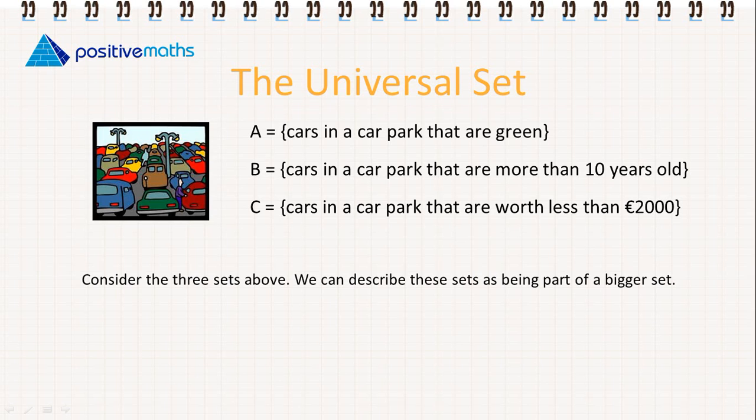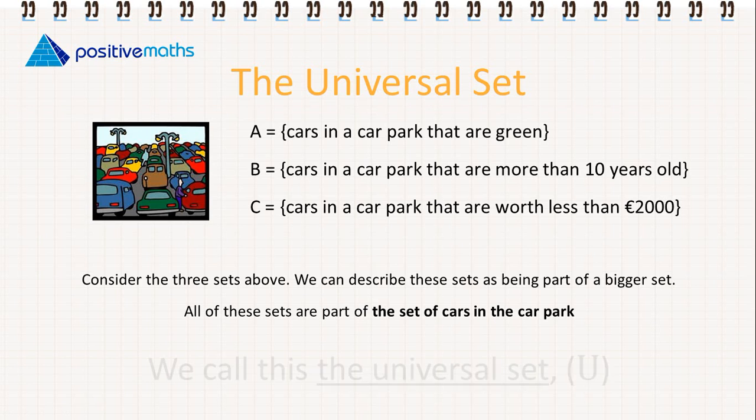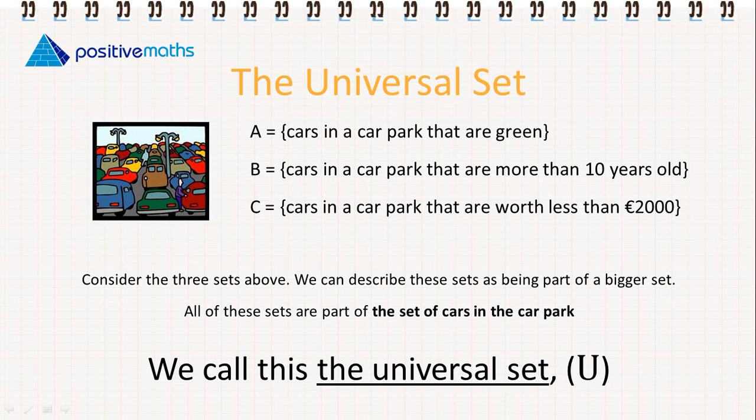So let's consider the three sets above. We can describe these sets as being part of a bigger set. All of these sets are part of the set of cars in the car park. We call this the universal set and we denote it with the capital letter U. We must make sure that we don't confuse this with the symbol for the universal set.